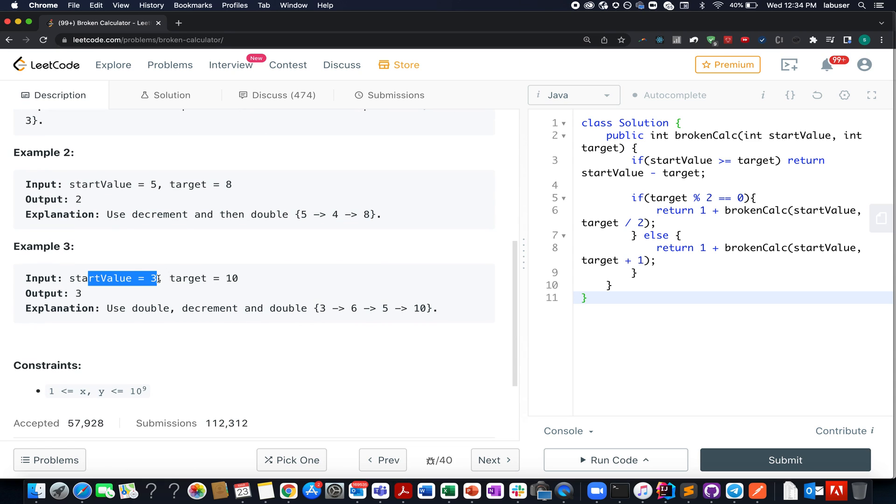Here the start value is 3, target value is 10. What do we do? We multiply 3 by 2, we get 6. We subtract 1 from it, we get 5. We multiply it with 2, we get 10. In totality, we have performed 3 operations.